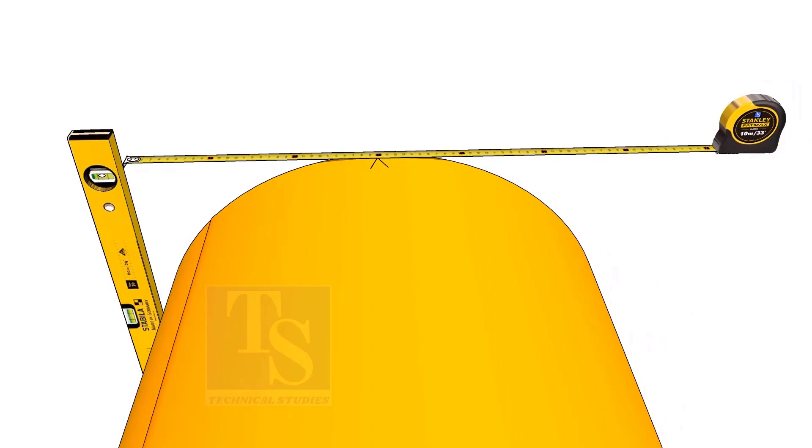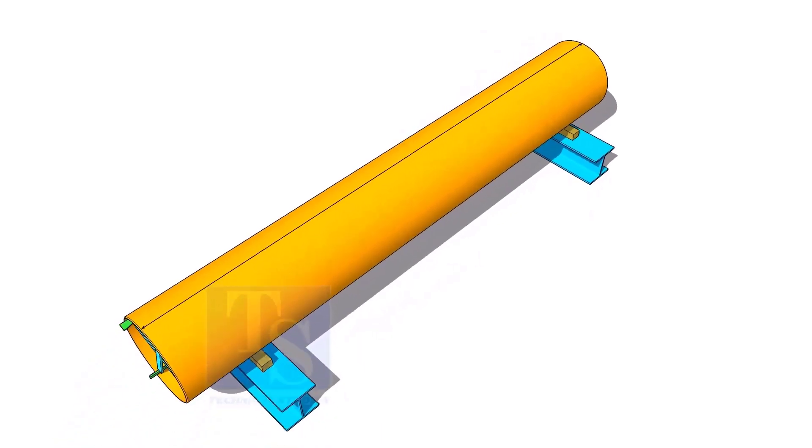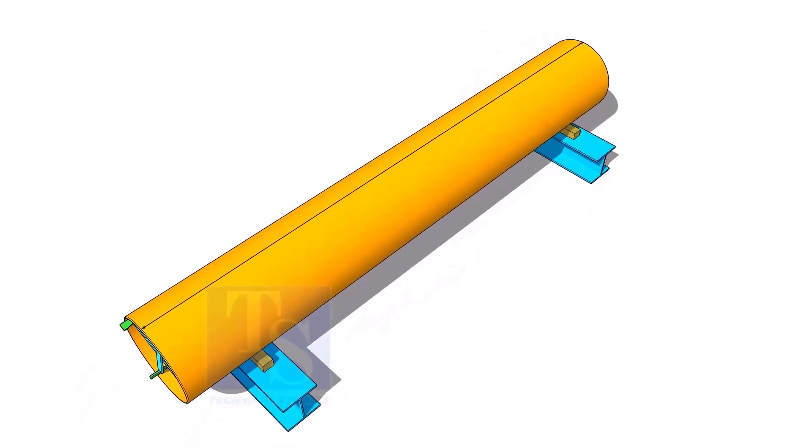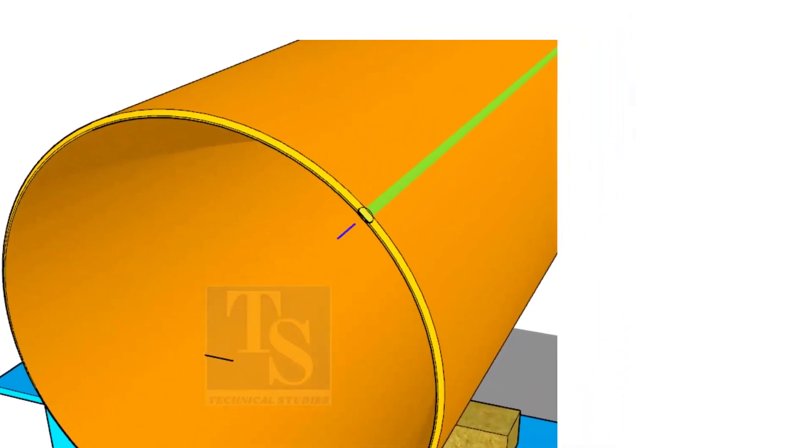Draw a line connecting these marks. If the pipe is welded, you can choose the center of the welding as center of the pipe. But, you need to check and make sure.